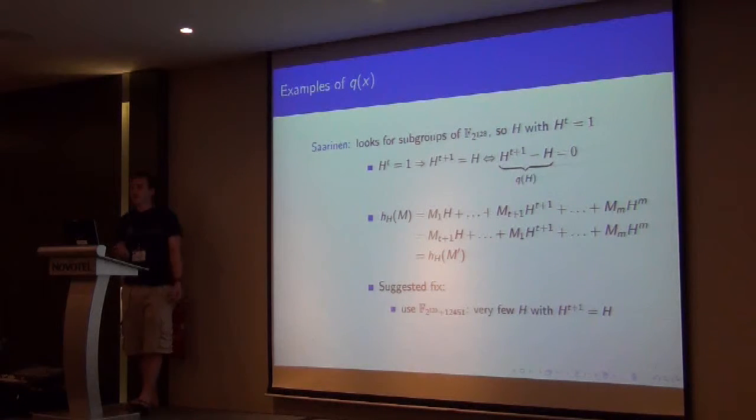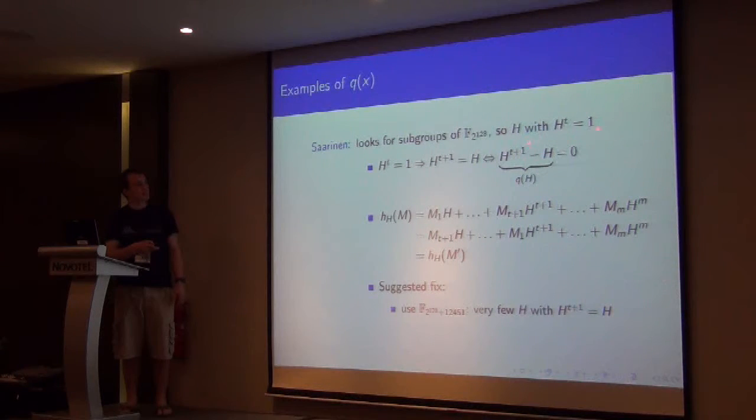And the suggested fix for this was to pick a field where there aren't so many subgroups, because then we're less likely to be able to find, we're less likely to have this holding.